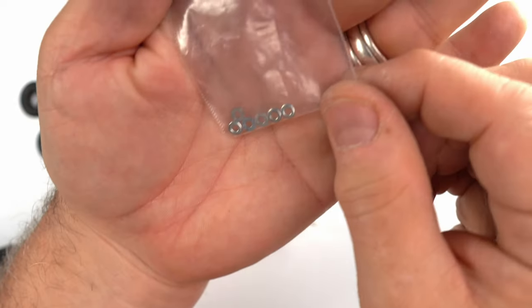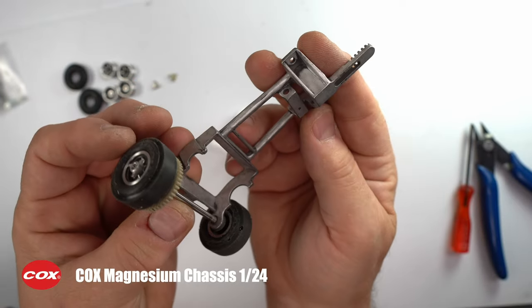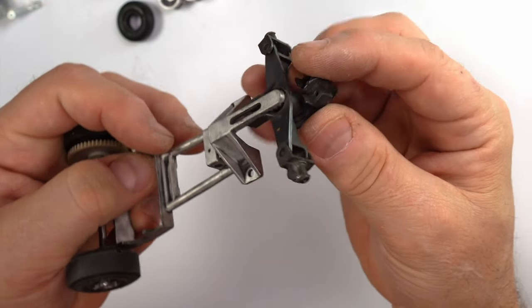You'll need a few of these self-tapping screws and a matching set of stainless washers to complete this assembly. It works with the standard Cox magnesium chassis for 1:24th scale cars.